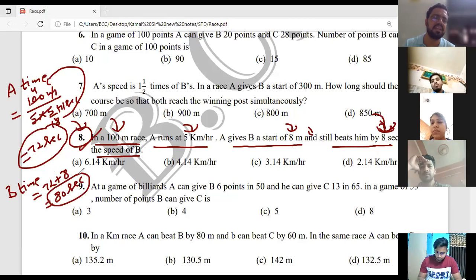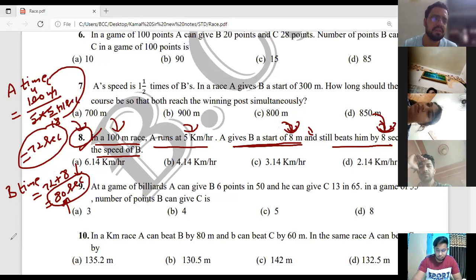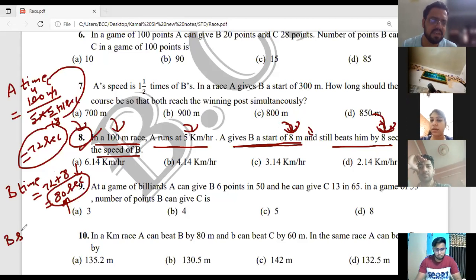So B completed the race in 82 seconds. If we pay attention carefully, A gave B an 8 meter head start. So B in 82 seconds didn't cover 100 meters. B in 82 seconds covered how much distance? 92 meters.